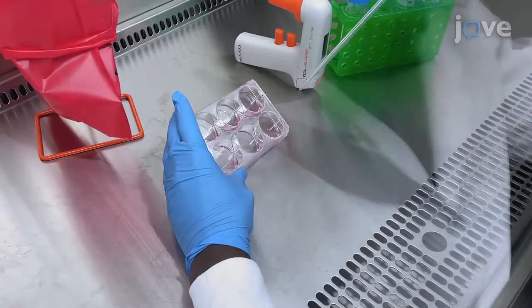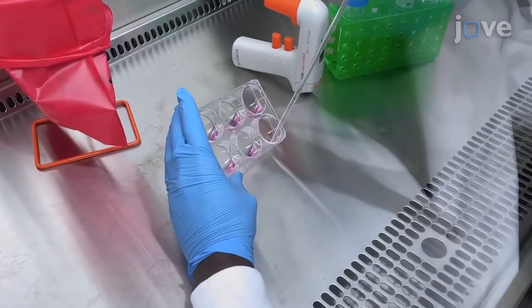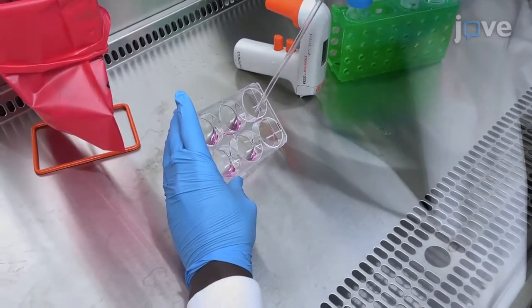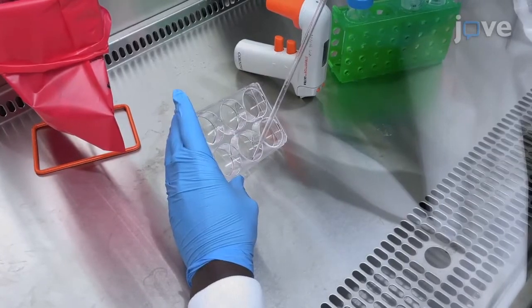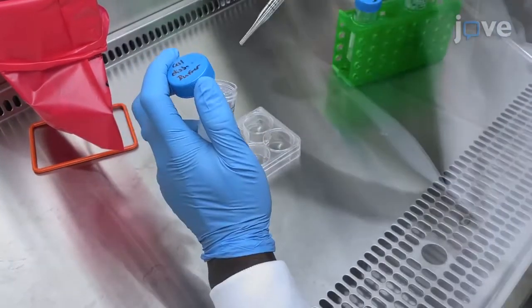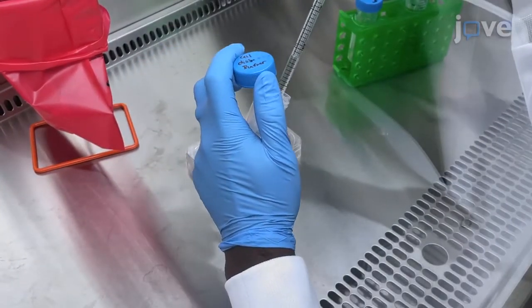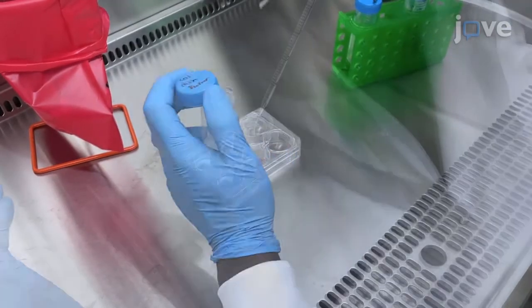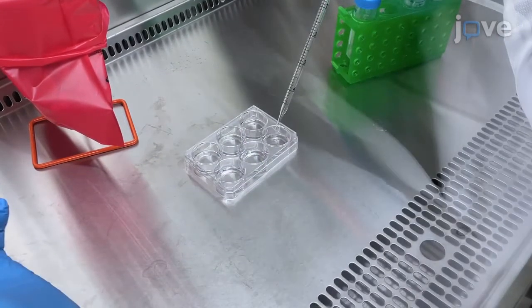Aspirate the spent cell culture medium from a human iPSC culture and rinse the cells three times with warmed medium. Add 1 milliliter of warm cell detachment solution to each well for a 1-minute incubation at 37 degrees Celsius.